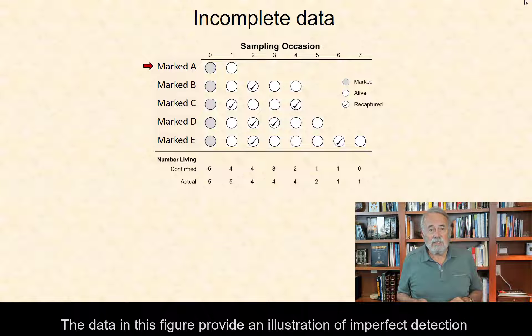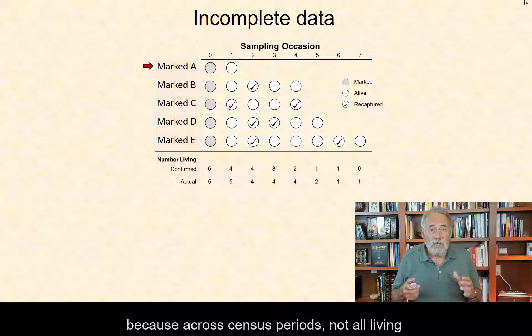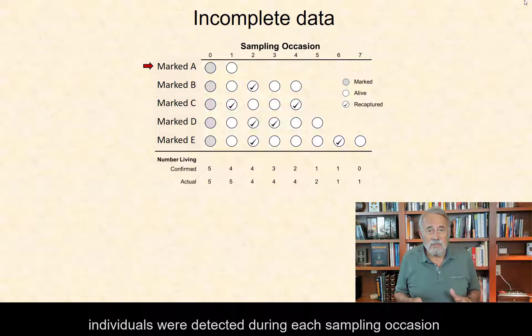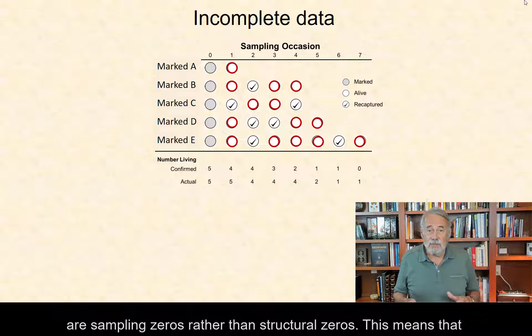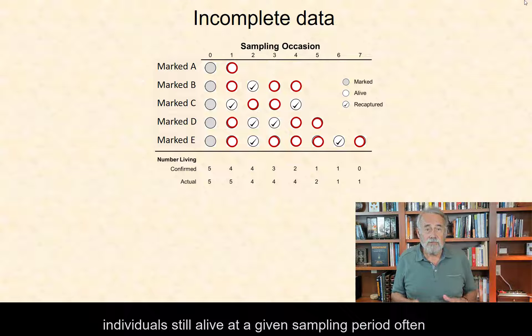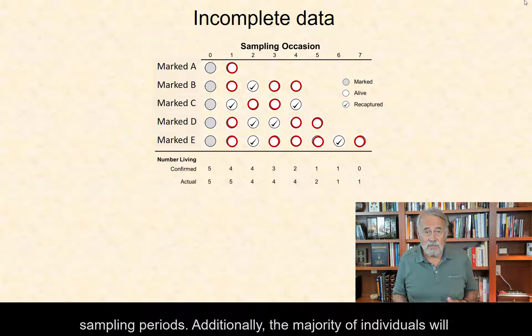The data in this figure provide an illustration of imperfect detection because across census periods, not all living individuals were detected during each sampling occasion, for example individuals B through E. In other words, the data points of zero are sampling zeros rather than structural zeros. This means that individuals still alive at a given sampling period often need to be verified as alive based on captures at later sampling periods.